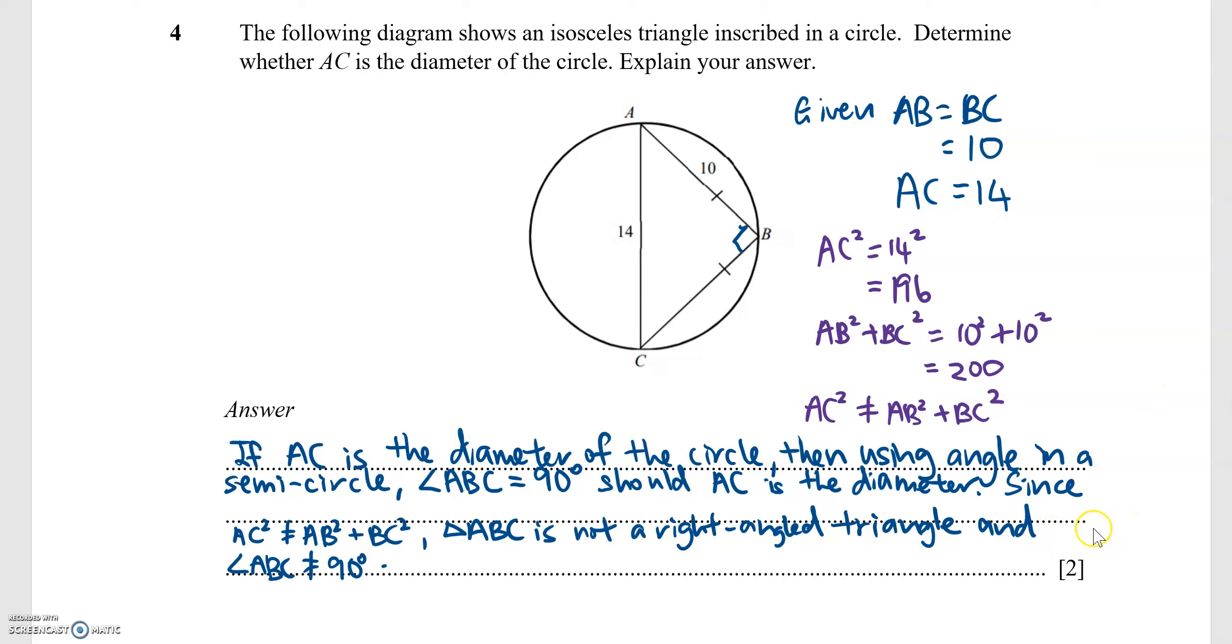Since angle ABC is not equal to 90 degrees, then AC is not the diameter of the circle. Because if it was, then we would be able to prove that angle ABC is 90 degrees.